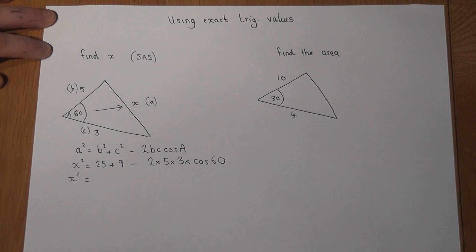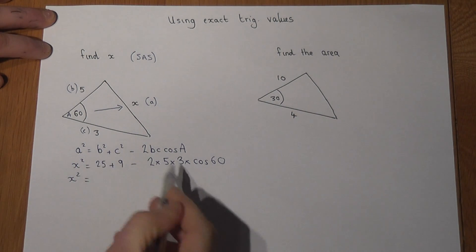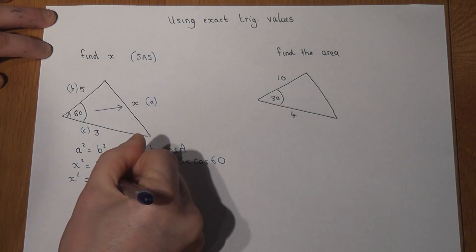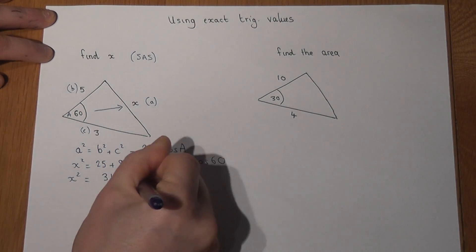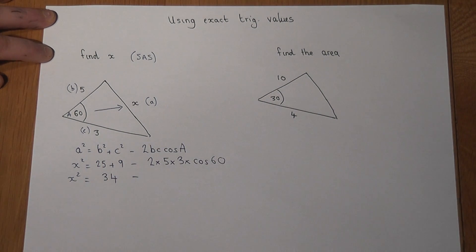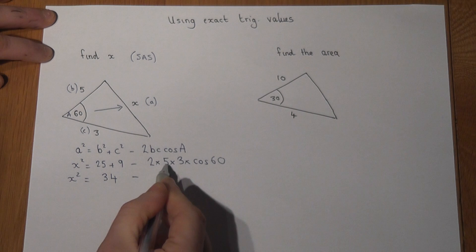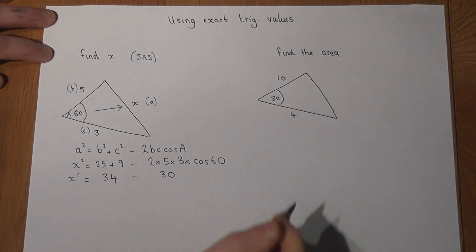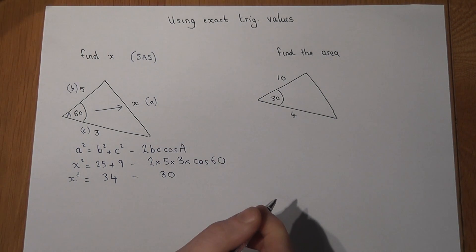Now to solve this, we must do the calculations in a certain order. I can simplify the 25 and the 9 to give me 34, and this is two times five times three - two times ten times three - it's 30, and we've got this cos 60.